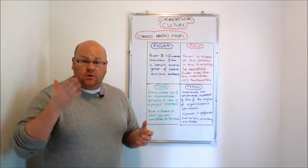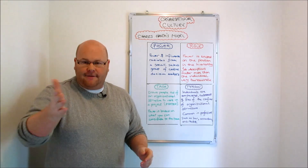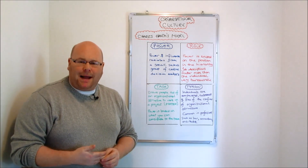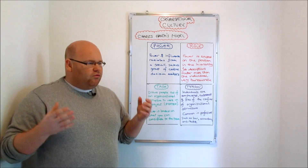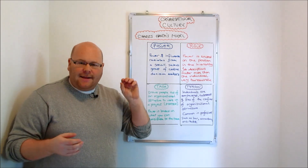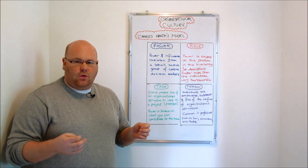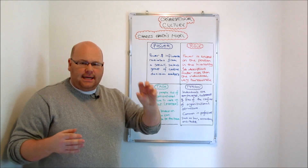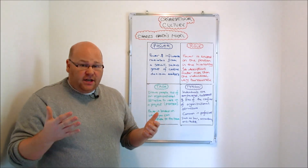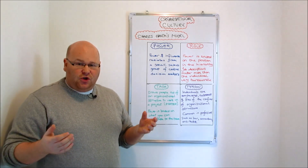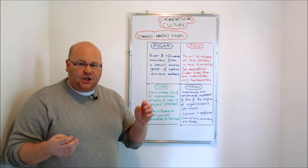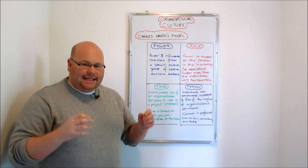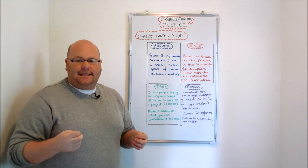Power was absolutely critical in determining the way things got done in different organisations. The first of the four classifications Handy came up with is known as a power culture. These are organisations that really revolve around the personalities of a few key central decision makers. Everybody reports to, gravitates towards, and looks to those few key central decision makers for instruction, guidance, praise, and confirmation. This core group at the centre sets the tone, culture, and ethos for everything that's done.